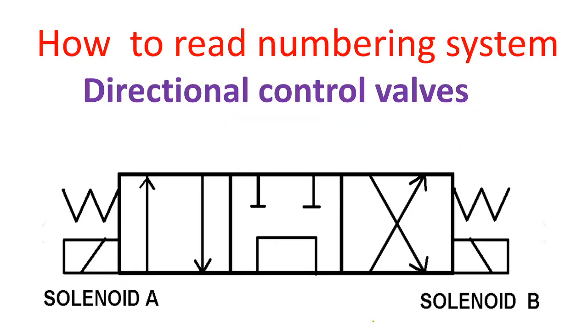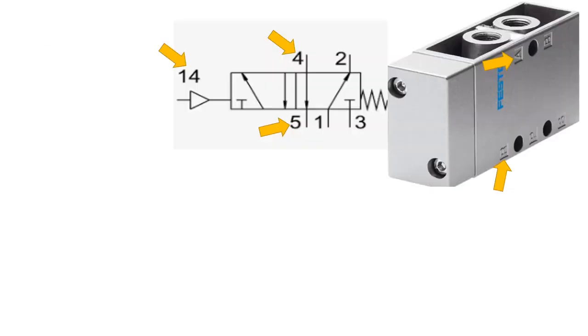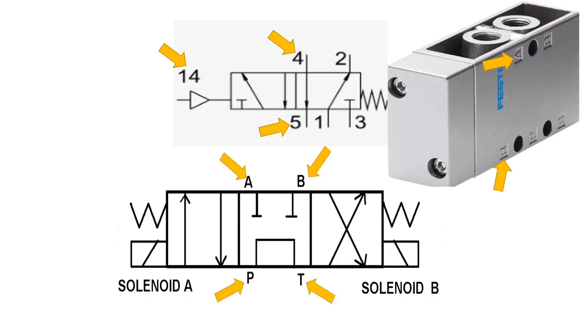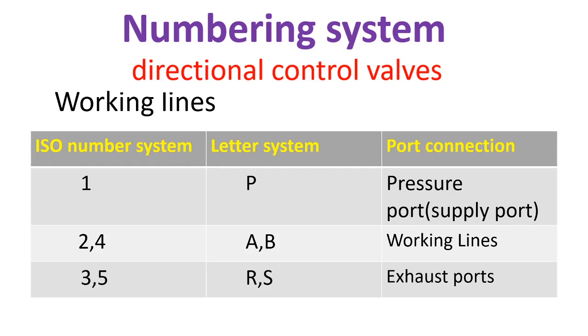Our next topic is how to read numbering system of directional control valves. If your directional control valve uses numbers or letters for their port's direction, here's the equivalent for the numbers and letters. For number one and letter P, that is pressure port or supply ports.